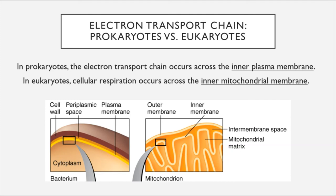Let's talk about where this process happens inside cells. Cellular respiration takes place inside the mitochondria in eukaryotes—a special organelle dedicated to this process. However, mitochondria are only found in eukaryotes, not in prokaryotes. In prokaryotes, the electron transport chain happens across the inner plasma membrane, because there is no mitochondria or any other internal structure inside a prokaryotic cell.